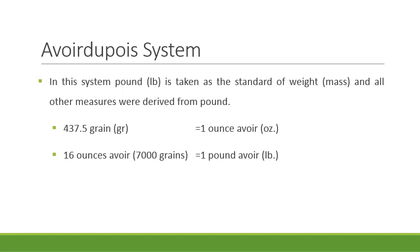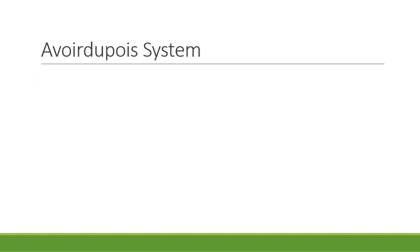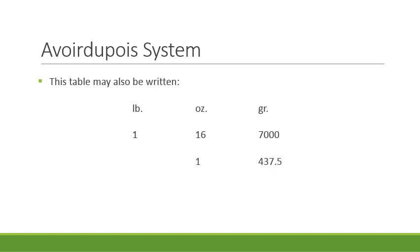In the avoirdupois system, pound is taken as the standard unit of weight or mass and all other measures are derived from it. The smallest unit is the grain, and 437.5 grains make one avoirdupois ounce, while 16 avoirdupois ounces make one avoirdupois pound, which is equivalent to 7,000 grains. One pound is made up of 16 ounces and 7,000 grains, while one ounce is composed of 437.5 grains.